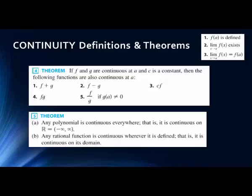If F and G are continuous at A and c represents a constant, then the following functions are also continuous: their sum, difference, product, a constant times either of them, and their quotient — with the caveat that the denominator cannot equal zero.